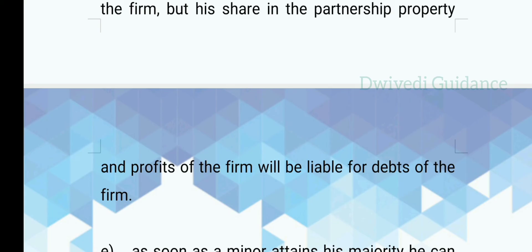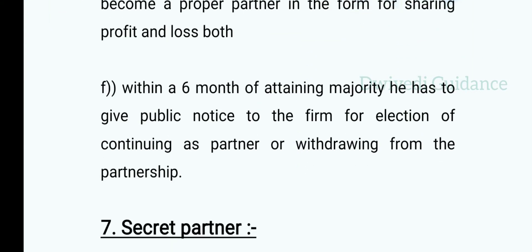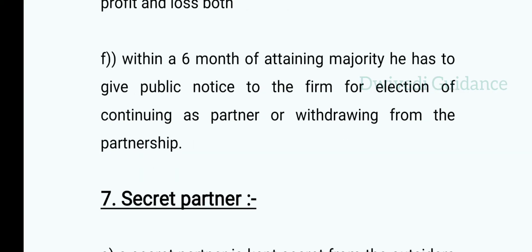While the minor is not personally liable, the property he has invested is liable for the firm's debts. When a minor attains majority, within six months of attaining majority, he has to give a public notice to the firm for election of continuing as a partner or withdrawing from the partnership. If you don't give notice within those six months, it is assumed that you will continue to be a partner.